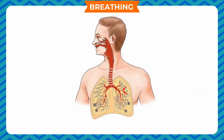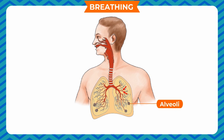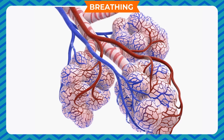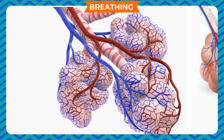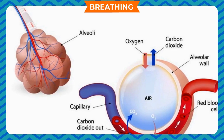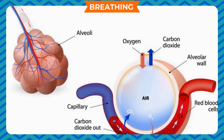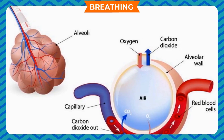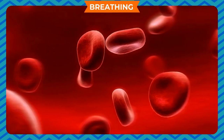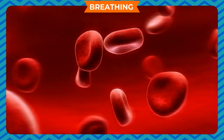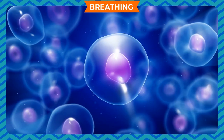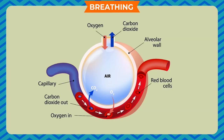Inside the lungs, each bronchus divides into smaller tubes called bronchioles. Air passing through the bronchioles reaches tiny sacs called alveoli (singular: alveolus). Each alveolus is surrounded by millions of tiny blood vessels. The oxygen from the alveolus enters the blood through these blood vessels and combines with the hemoglobin in the blood to form oxyhemoglobin, which is carried to all the cells of the body. The same process carries away carbon dioxide from the body.